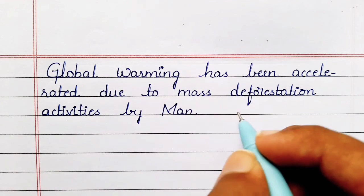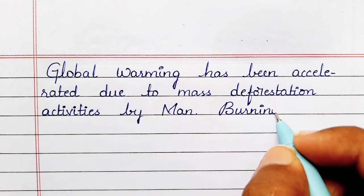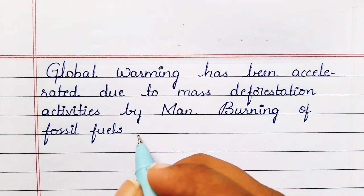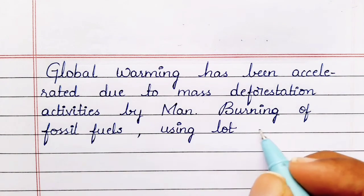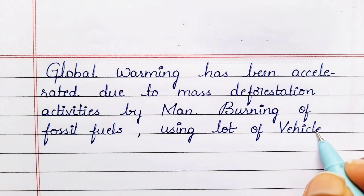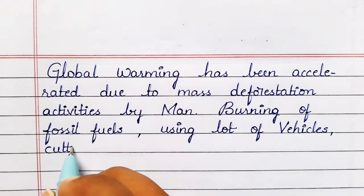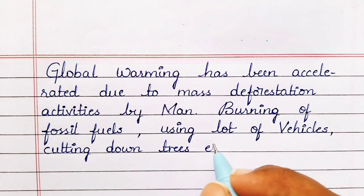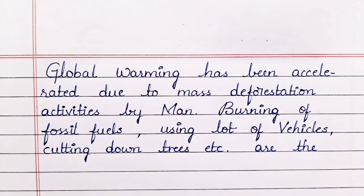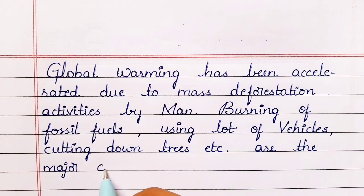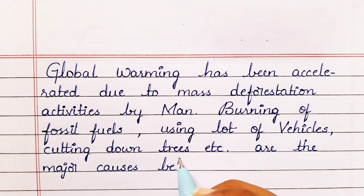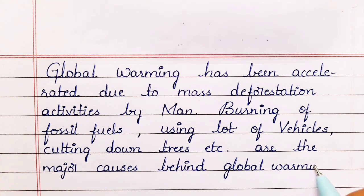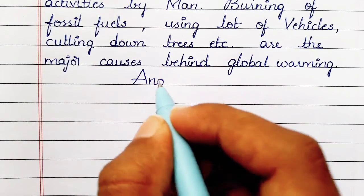Global warming has been accelerated due to mass deforestation activities by man. These activities include burning of fossil fuels, use of a lot of vehicles, and cutting down trees, and these are the major causes behind global warming.